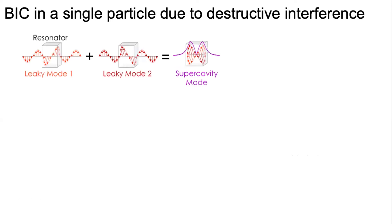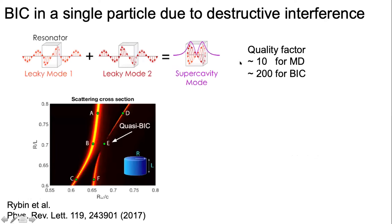Modes whose formation is inspired by the mechanism of bound states in the continuum are called quasi-BIC modes. In the case of a single particle, this is the result of destructive interference of two leaky modes inside the resonator, leading to very high quality factors compared to, for example, fundamental Mie-type modes.